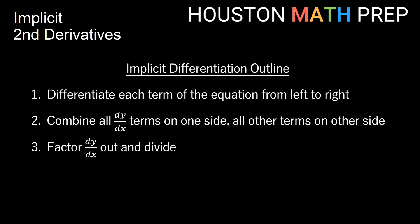Welcome back everyone, Houston Math Prep here. If you are coming to us from our implicit differentiation video doing first implicit derivatives, we gave you this outline at the end that said we differentiate from left to right, we combine all our dy/dx terms on one side, move all the other terms over to the other side once we've done that, and then lastly we factor out dy/dx or y prime and divide to get a solution.